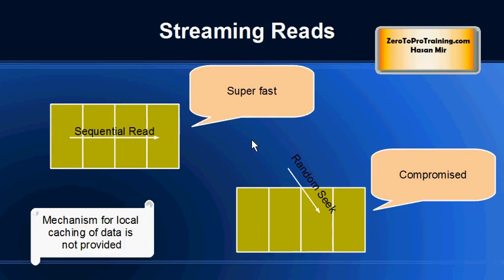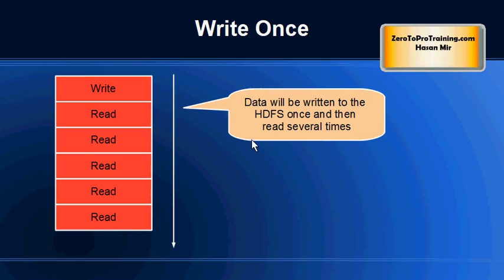Since Hadoop is designed for streaming reads, caching of data is not provided. In other systems, caching of data is available so that if you are doing another read on the same piece of data, it is read very fast from the cache. Another reason caching is not available is because you get faster access to the data directly by doing the sequential read, as opposed to getting access through caching. So caching is not available in Hadoop.